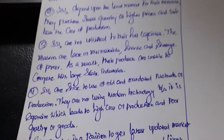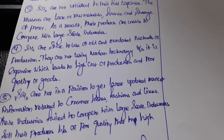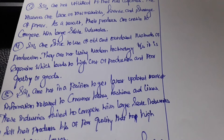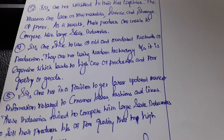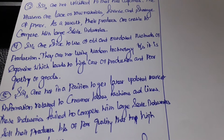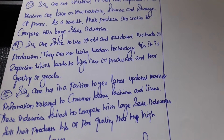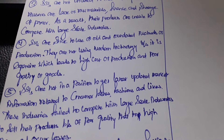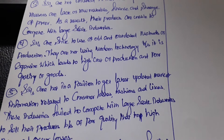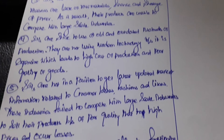The fourth problem is that SSIs strictly use old and outdated methods of production. They are not using modern technology because it is expensive, which leads to high cost of production and poor quality of goods. That's why they produce poor quality goods.